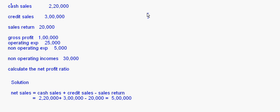Next we compute the net profit. We have been given the gross profit. To the gross profit, we add incomes and subtract expenses — just like the format of the profit and loss account where incomes are added to gross profit and expenses are put on the debit side.